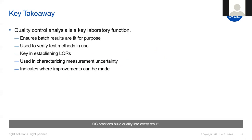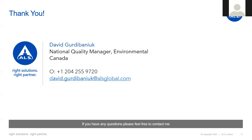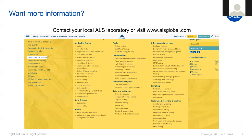Key takeaways: quality control analysis is a key laboratory function. It ensures that batch results are fit for purpose, is used to verify test methods in use, and is key in establishing LORs. We also use it to characterize measurement uncertainty and indicate where improvements can be made. Using these systems, quality control can build quality into every result. Thank you for your attention — that was a quick overview of some of our QC practices. Feel free to follow up with me using my contact information, or contact your local ALS laboratory or visit ALSglobal.com for additional resources.